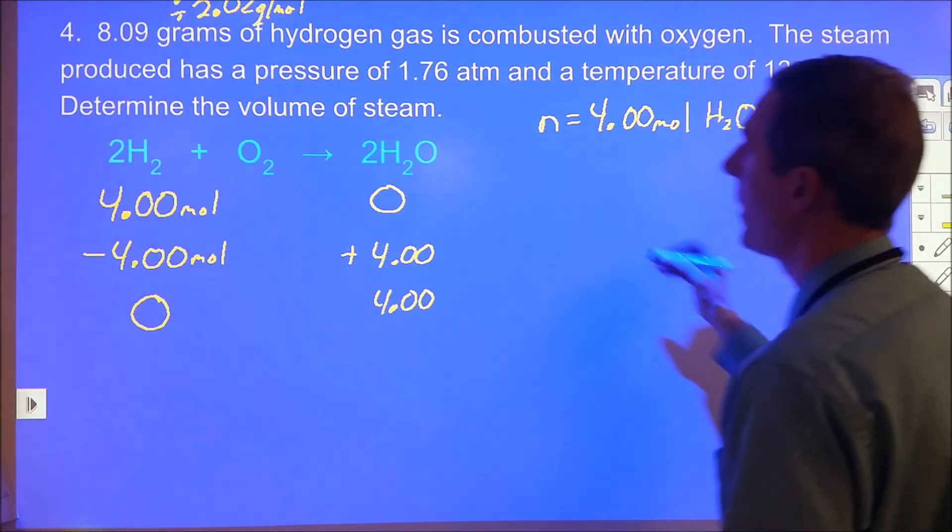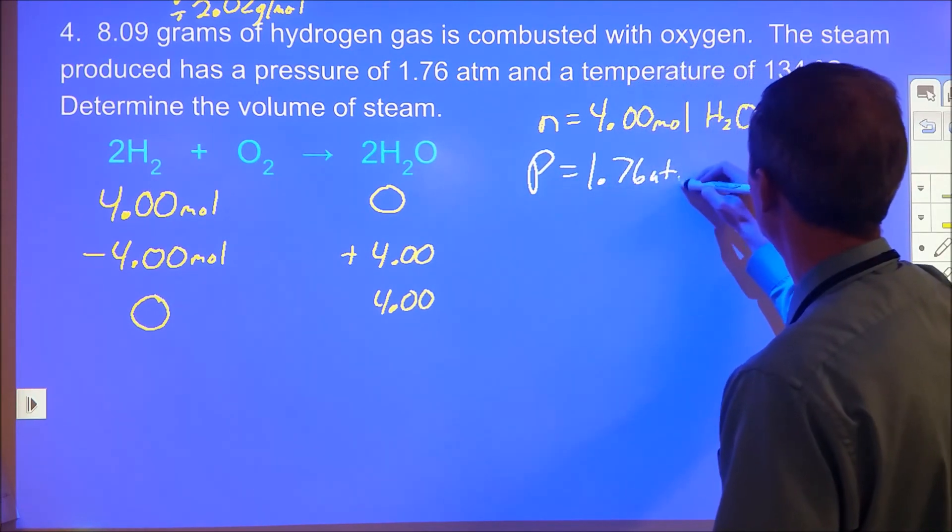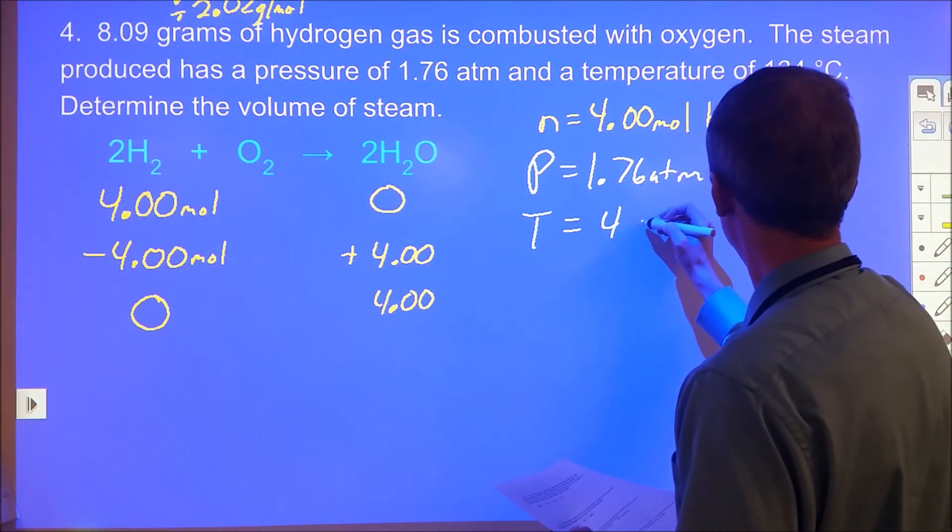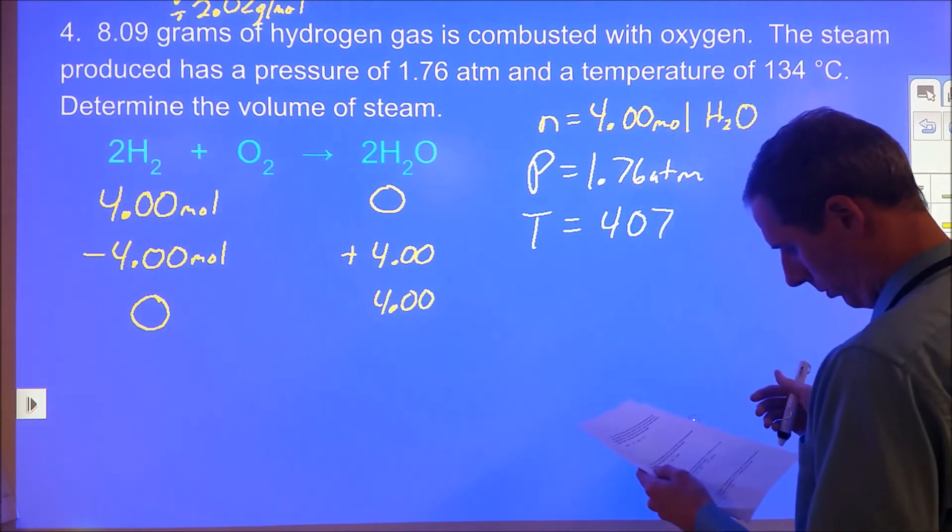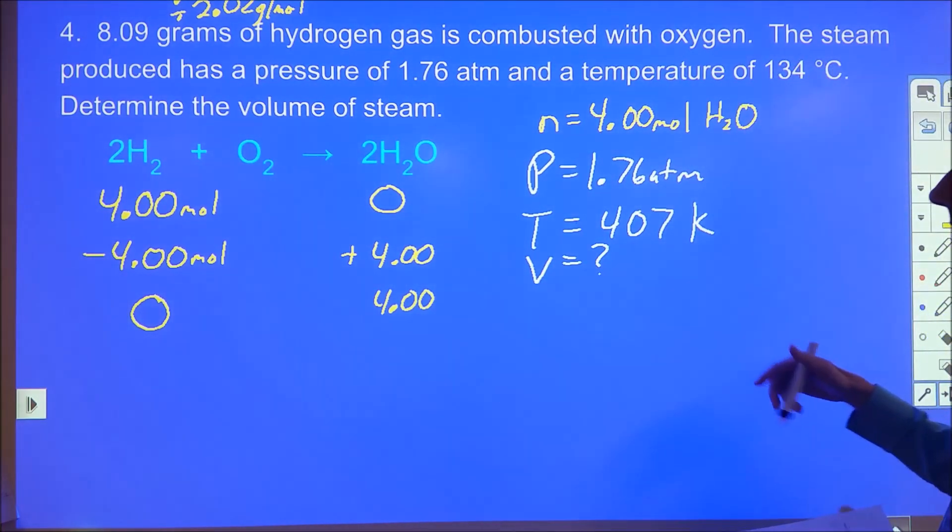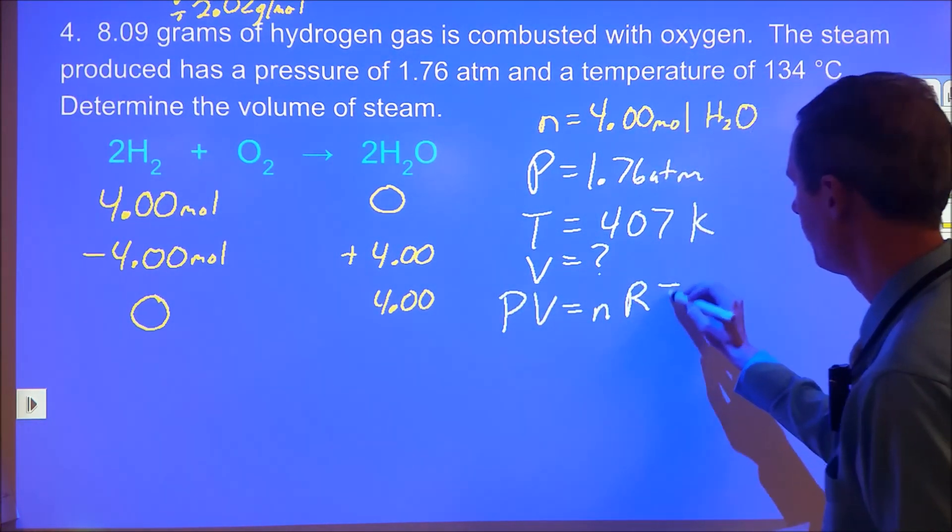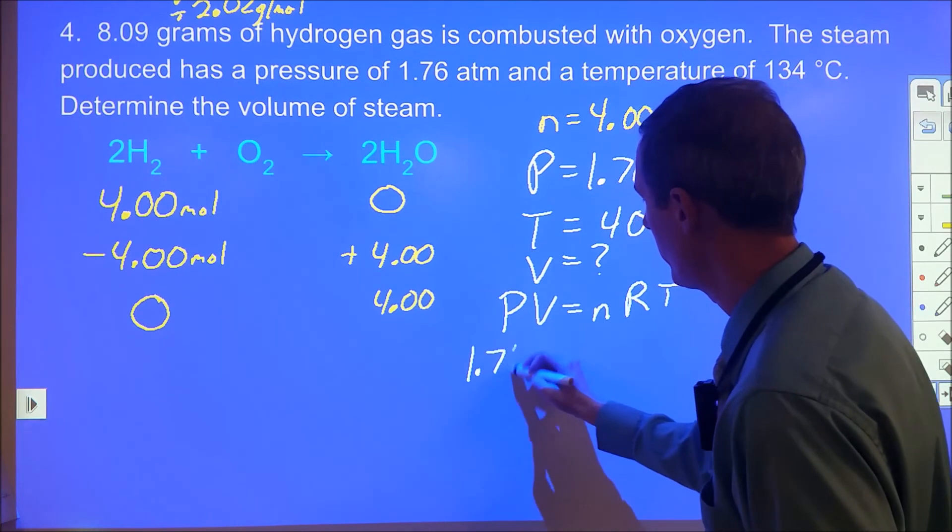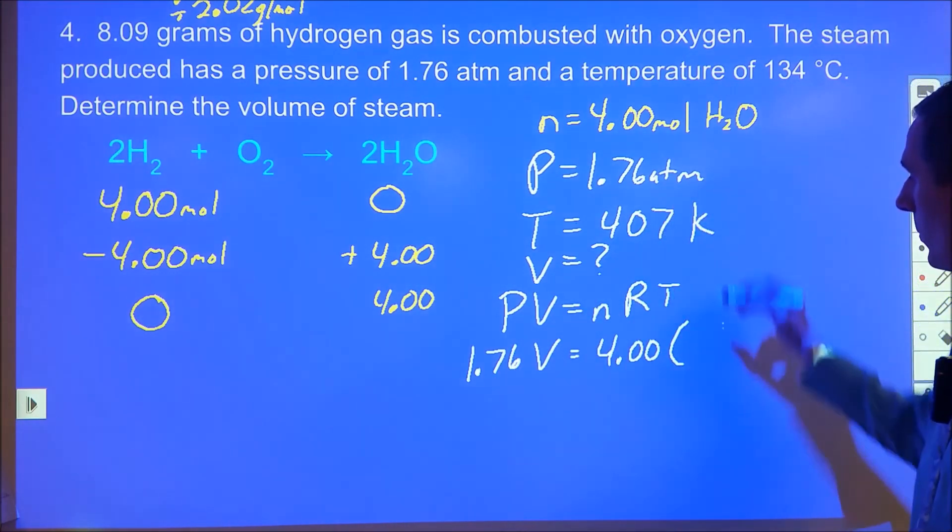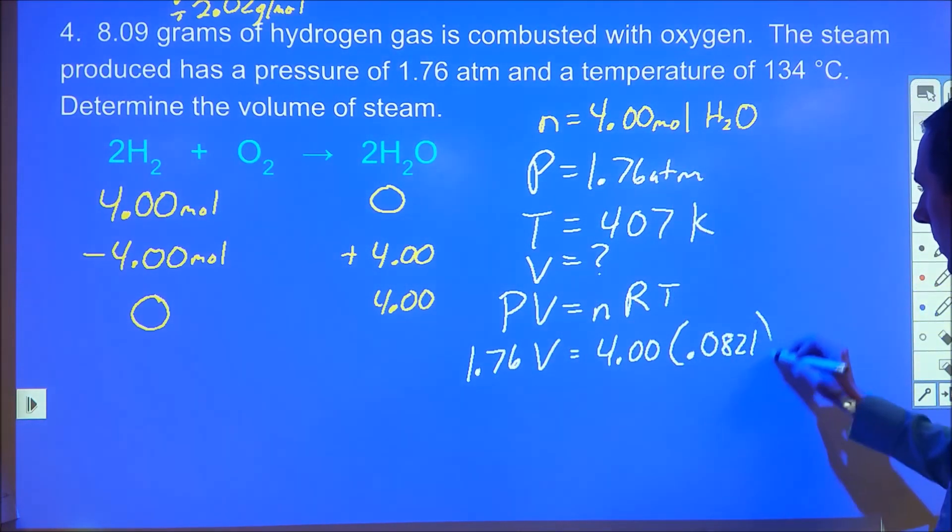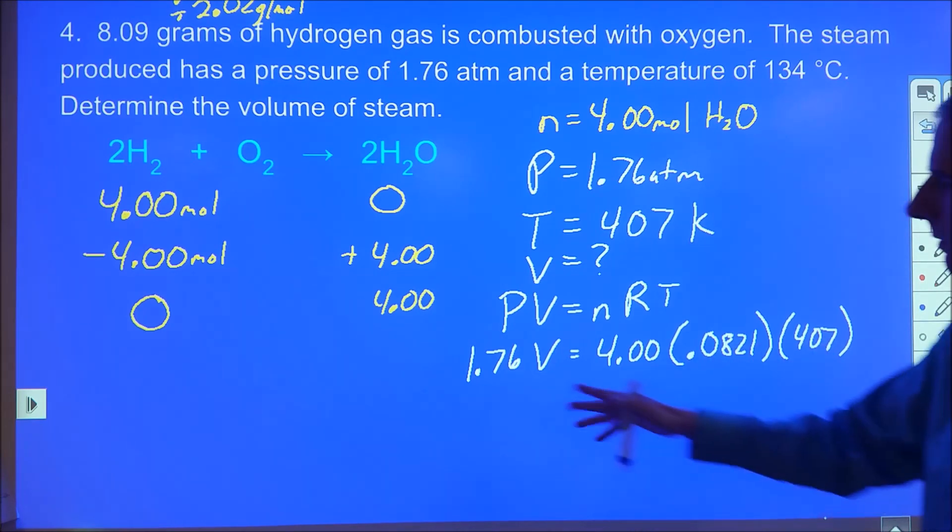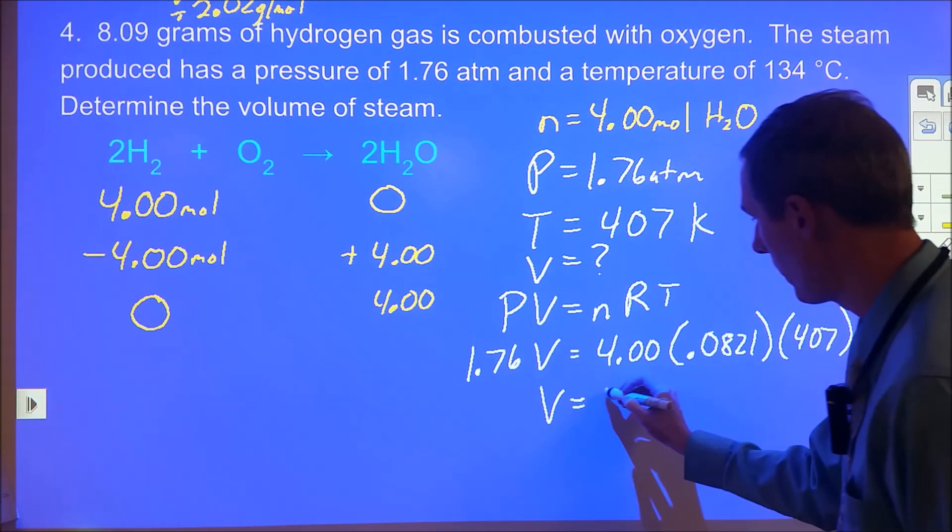We know the pressure is 1.76 atmospheres, the temperature is 134 plus 273, which is 407 kelvin, and we want the volume. Using PV equals nRT: 1.76 atmospheres times volume equals 4 moles times 0.0821 times 407 kelvin. Solving this gives us a volume of 75.9 liters.